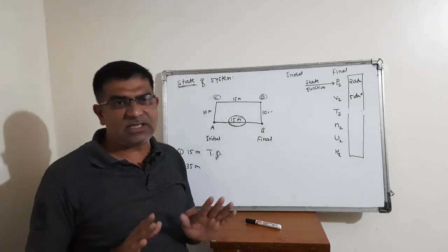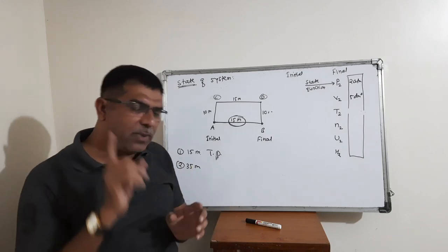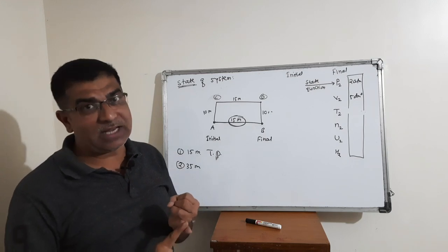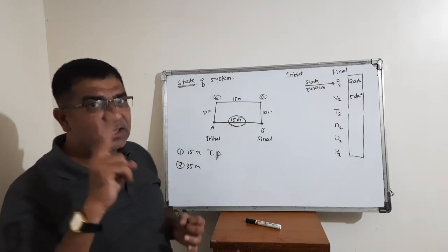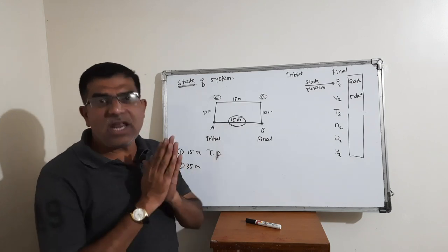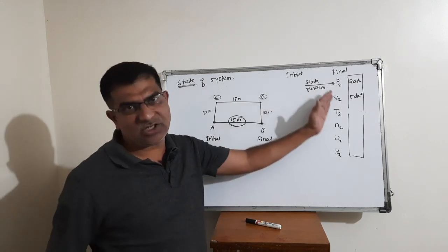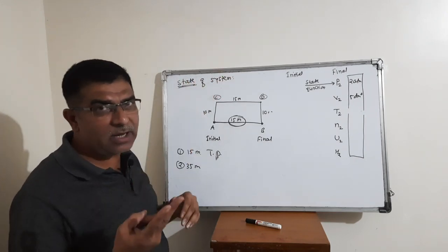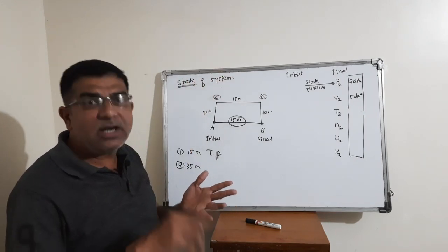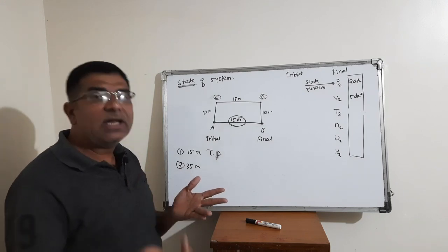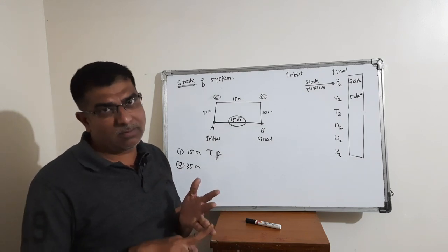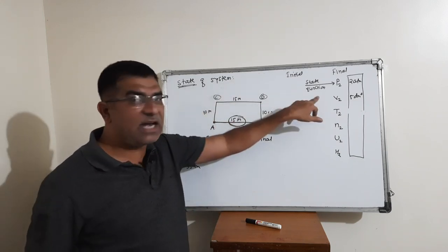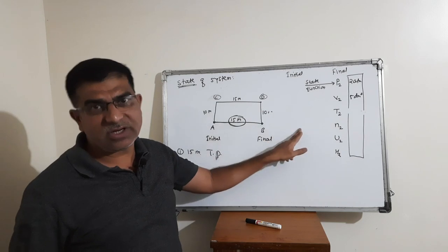To summarize: work done and heat are the two path functions. All remaining thermodynamic properties are state functions. We covered thermodynamic properties — extensive properties depend on quantity of matter, intensive properties are independent of quantity of matter. Then we covered the state of a system, state function, and path function.